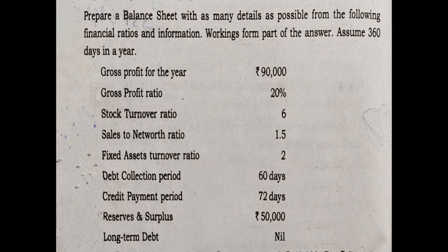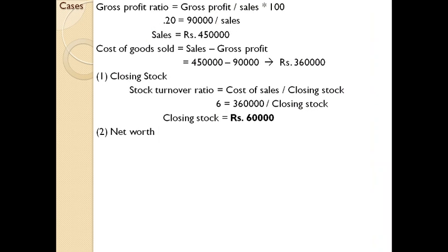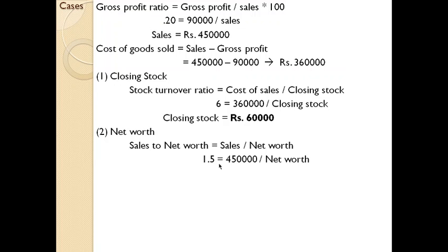For net worth, the information given is that sales to net worth ratio is 1.5. Sales to net worth means sales divided by net worth. So 1.5 equals 4,50,000 divided by net worth, giving net worth as 3,00,000.